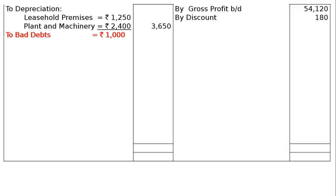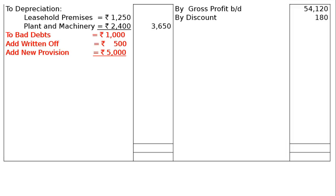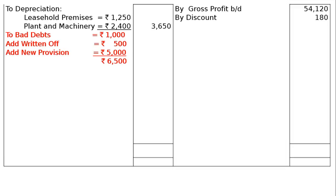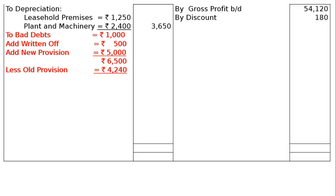To bad debts: rupees 1,000 is given on the debit side of the trial balance. From adjustment (b): write off rupees 500 as further bad debts, and make a provision for doubtful debts equal to rupees 5,000 (new provision). The inside column total is rupees 6,500. Less old provision from the credit side of the trial balance — provision for bad and doubtful debts as on 1st April 2015 — rupees 4,240. Final column figure: rupees 2,260.